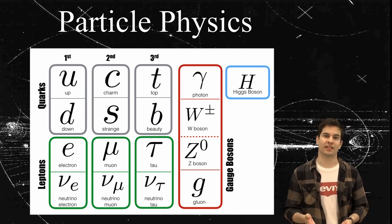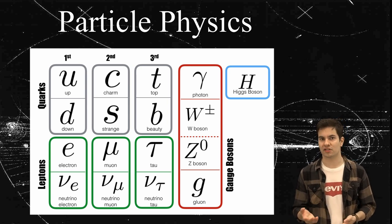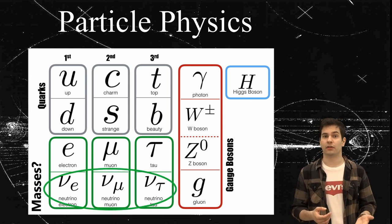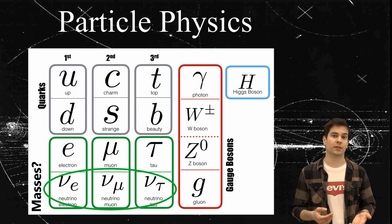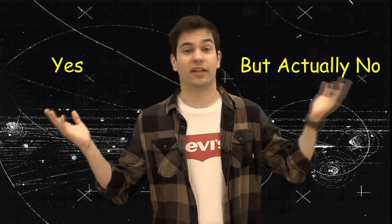While the Standard Model is very successful in explaining most of what we have seen, it does have some glaring flaws such as not being able to explain neutrino masses, the oscillations between their flavors, or not having candidates for dark matter. So does this then mean that the Standard Model is wrong? Well, yes, but actually no.